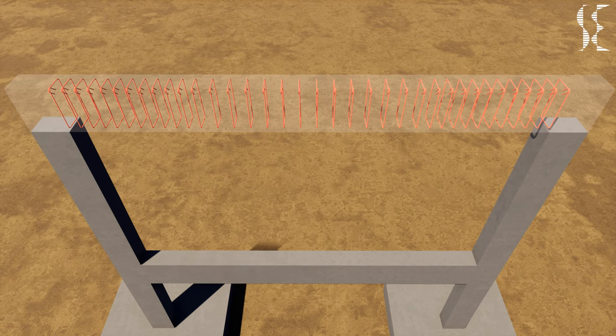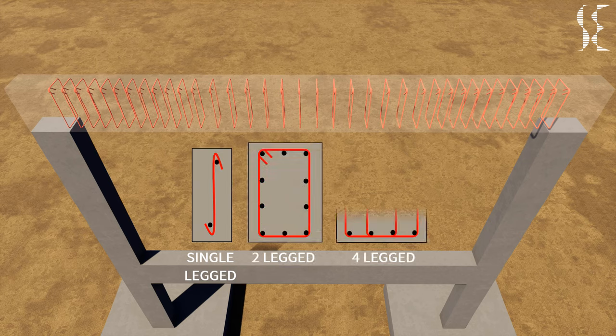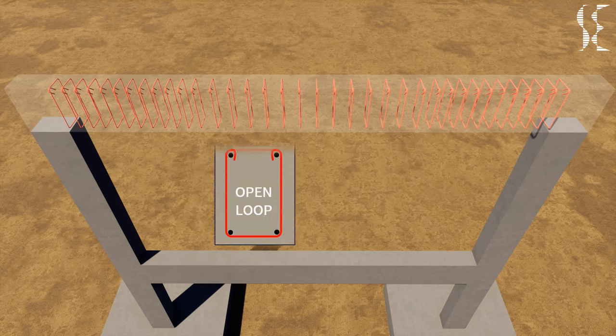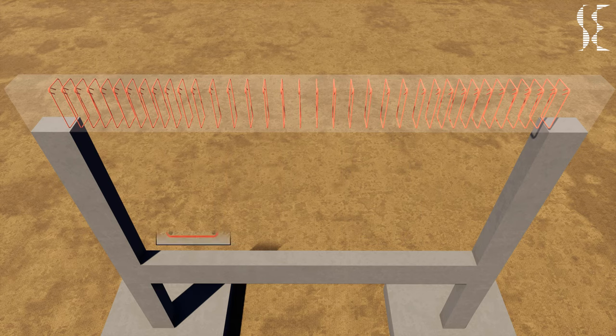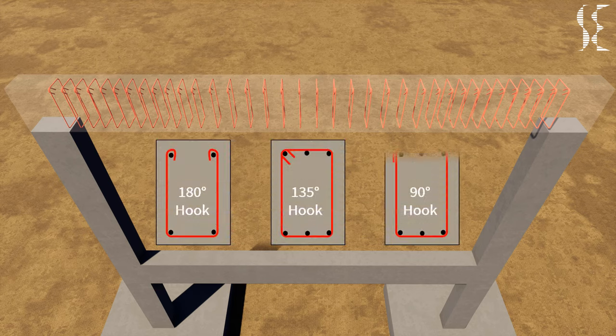Stirrups can be classified on the number of legs they have. They can be single-legged, two-legged or four-legged and so on. Based on loops, stirrups can be open looped or closed loop. Lastly, based on hook angle, hooks can be 180 degree, 135 degree or 90 degree as per design requirements.